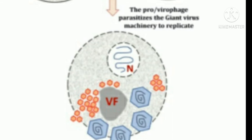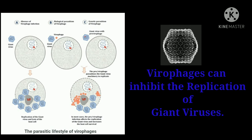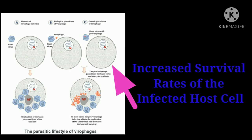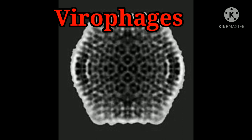Virophages rely on the viral replication factories of giant viruses for genome replication and transcription, which leads to impairing or deactivation of the giant viruses. Thus, virophages can inhibit the replication of giant viruses, which may lead to increased survival rates of the infected host cell population, that is, unicellular eukaryotes. The first virophage was discovered in 2008.